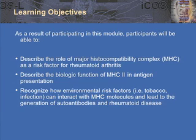Our learning objectives include: as a result of this participation, participants will be able to describe the role of major histocompatibility complex as a risk factor for rheumatoid arthritis, describe the biologic function of MHC class II molecules in antigen presentation, and recognize how environmental risk factors such as tobacco and infection may interact with MHC and lead to the generation of autoantibodies and rheumatoid disease.